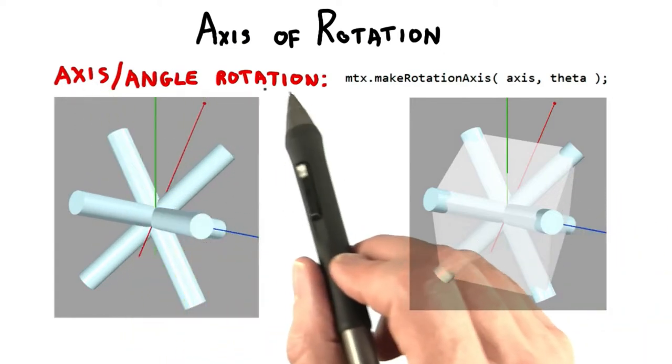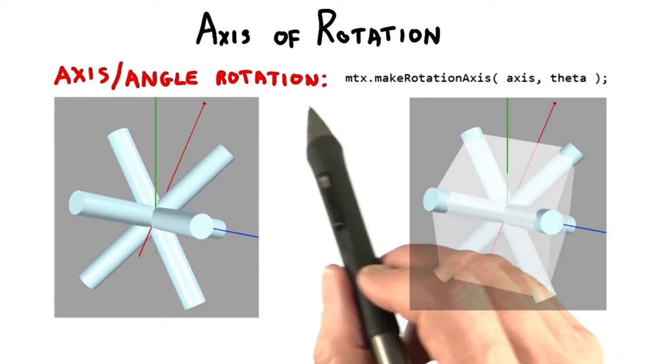With the axis to angle function, I need to figure out what axis I want to rotate around, and how much to rotate.